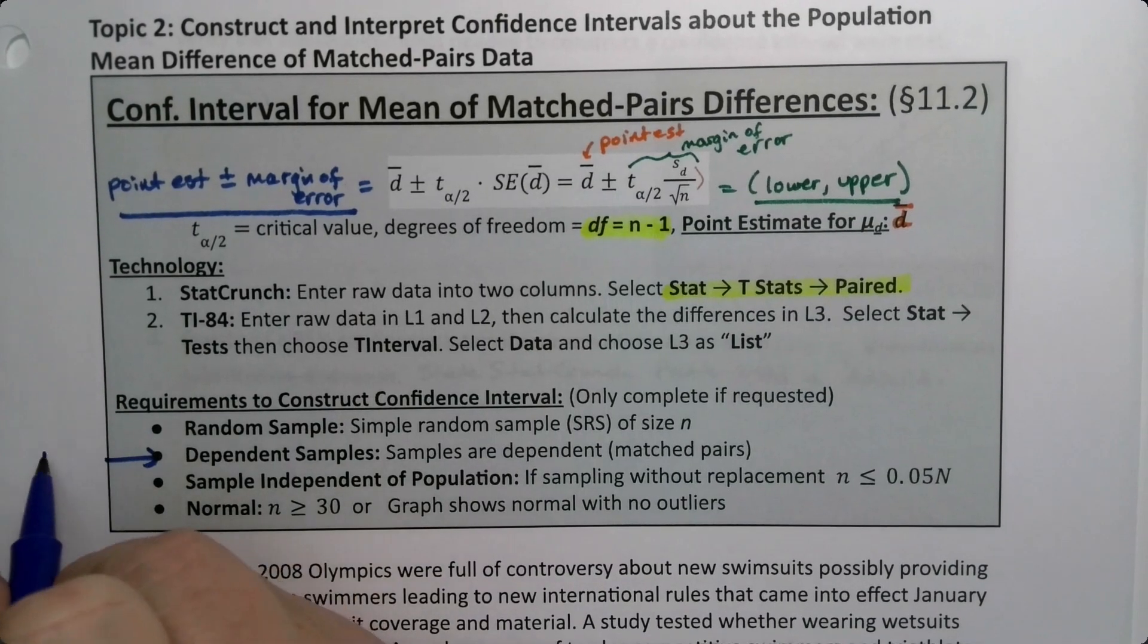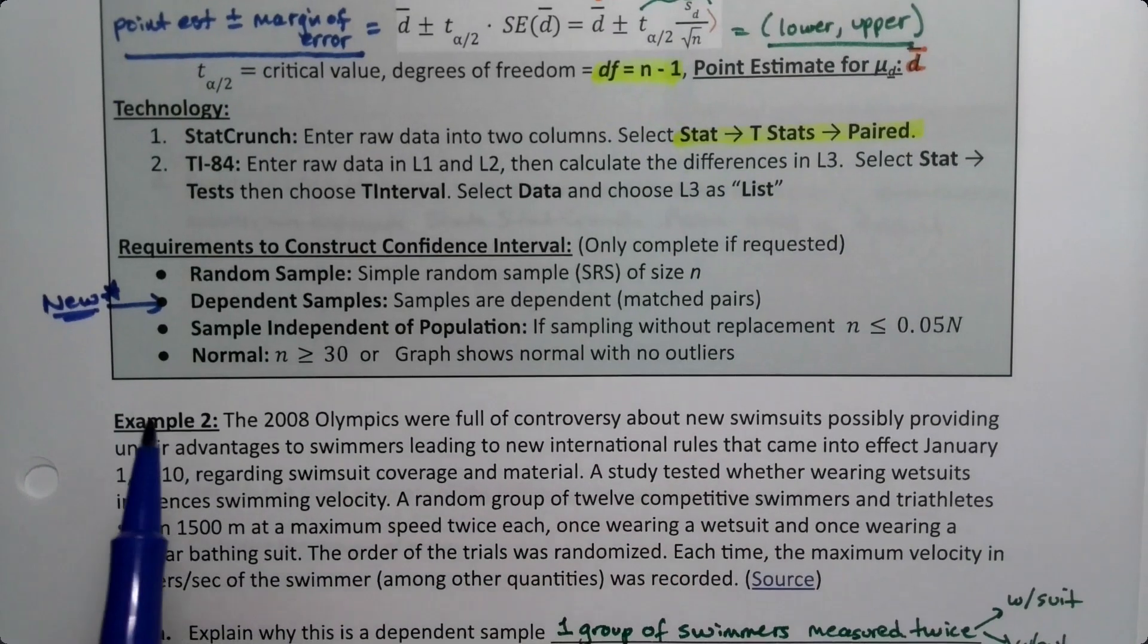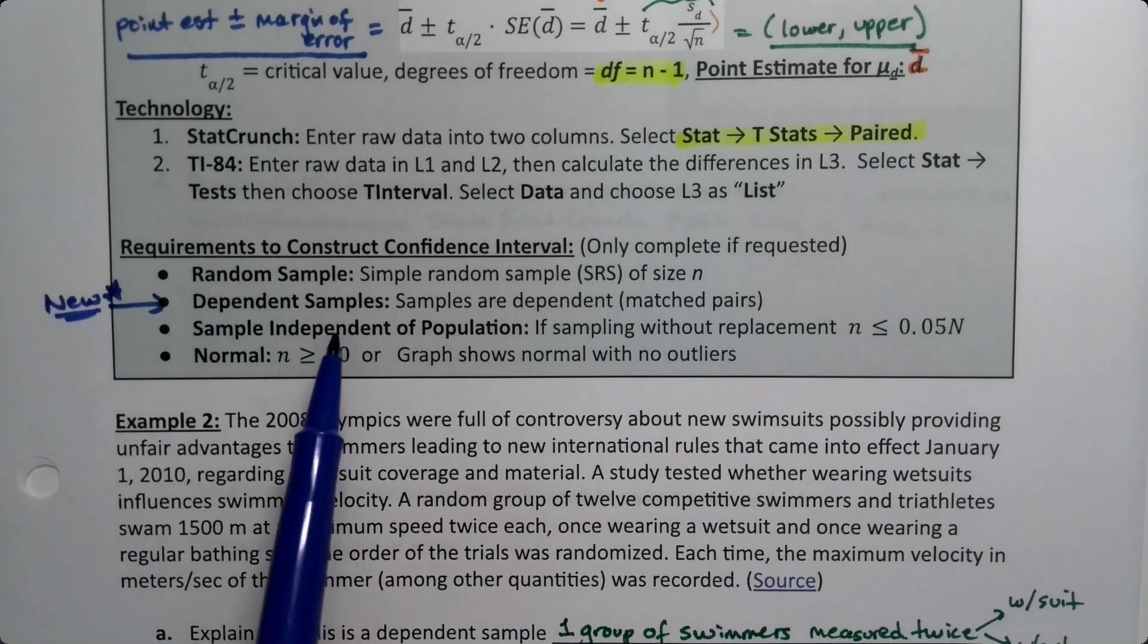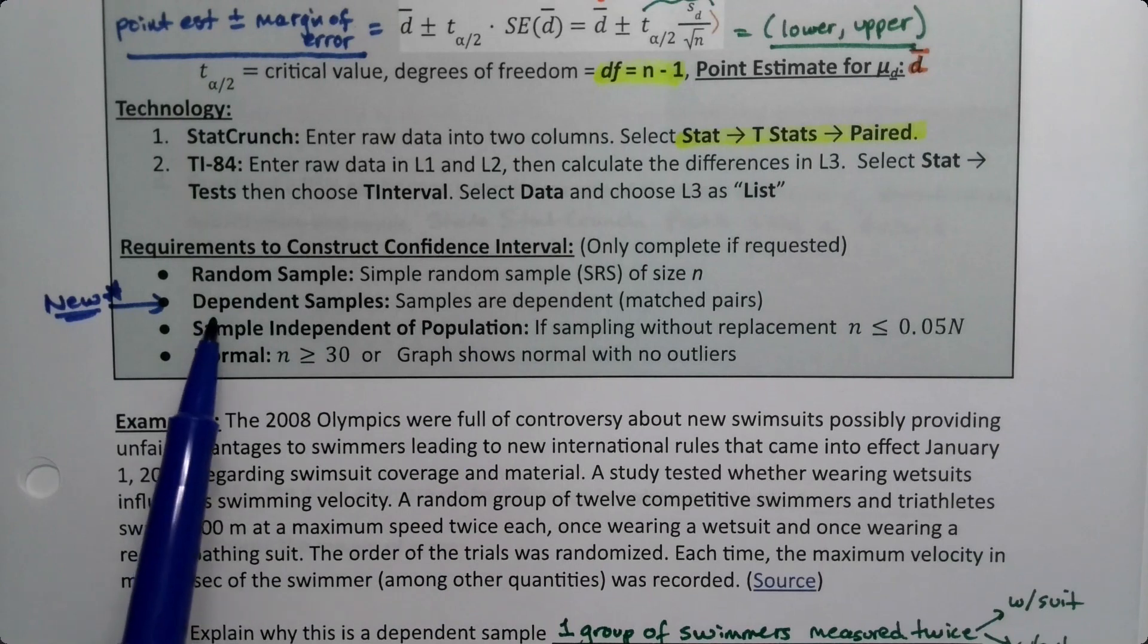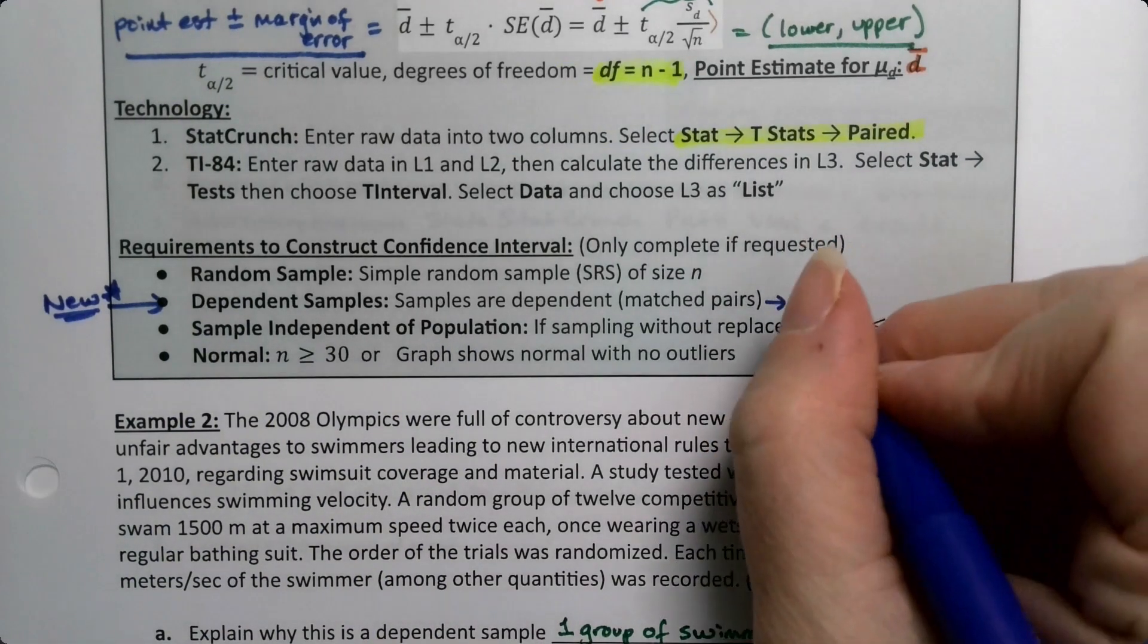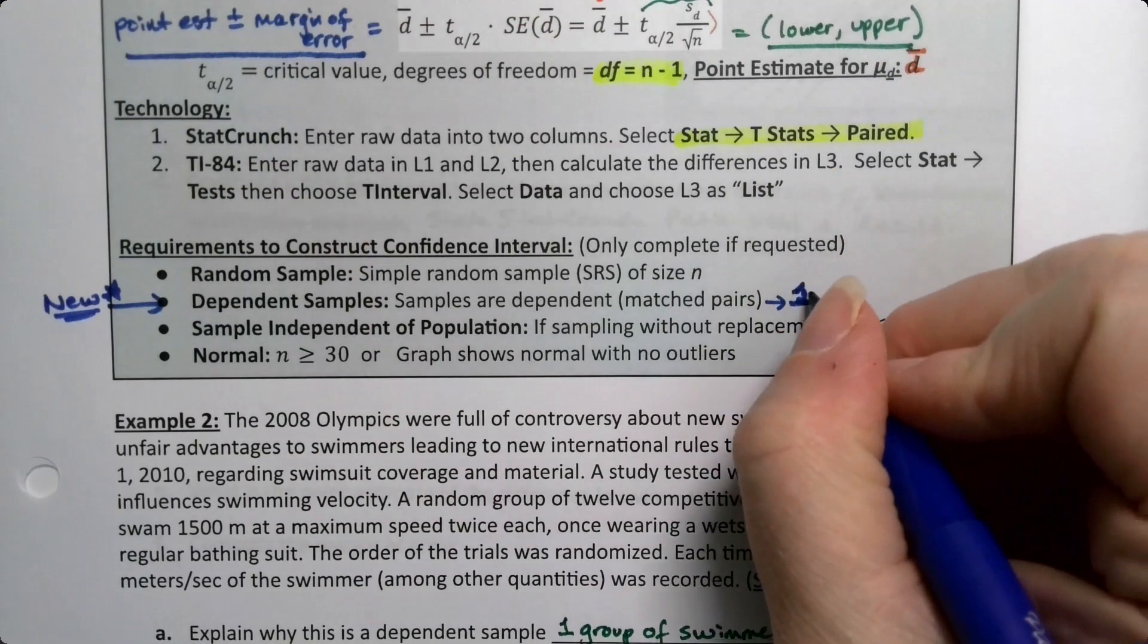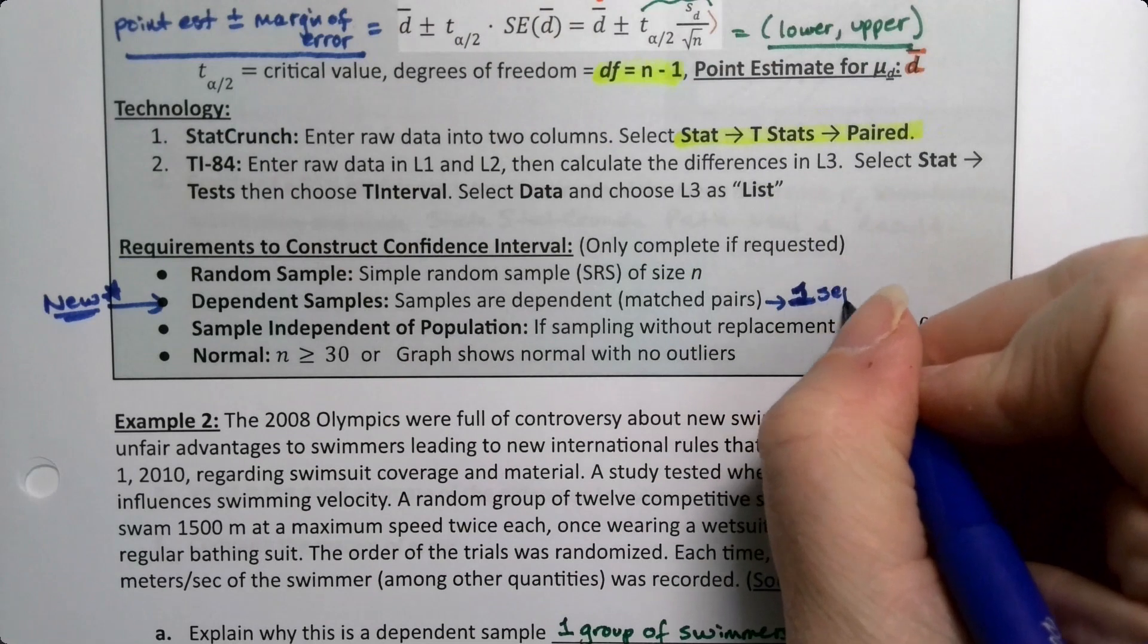Don't forget that there's this new piece to our requirements. We had random, independent of the population, and normal before, but now we have this dependent sample bit, which is one separate group measured twice.